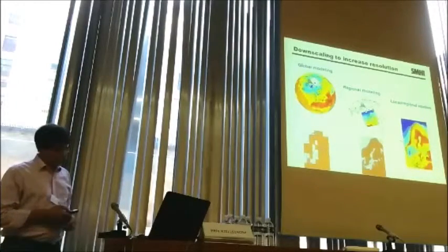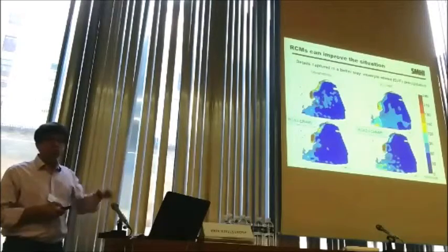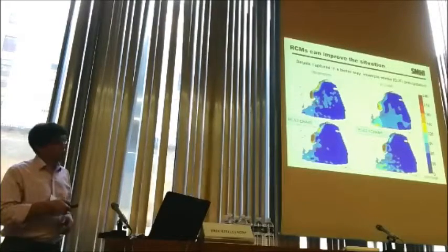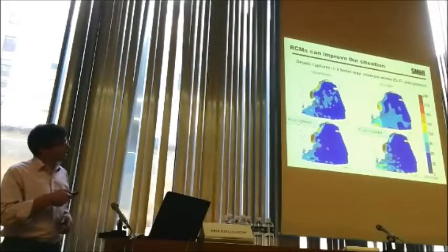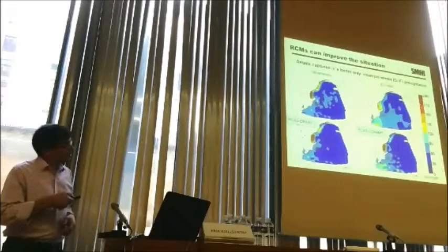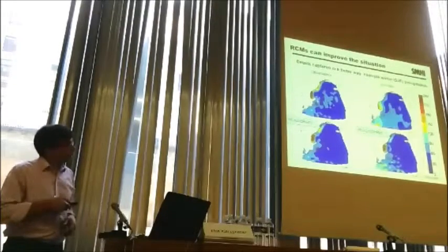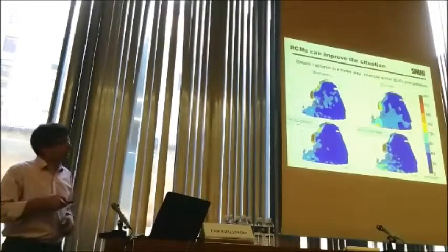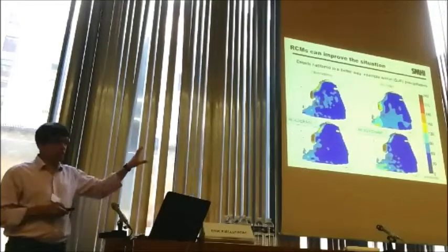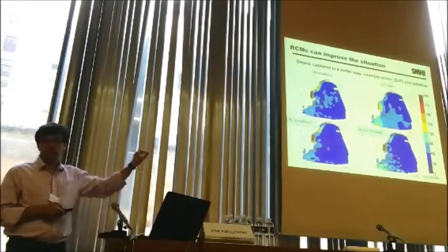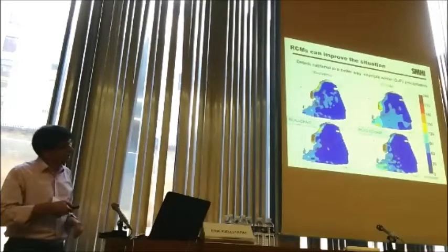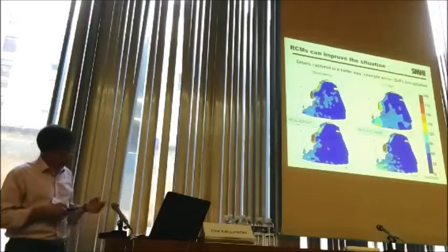The next slide simply shows that this method works. On the top we have the two maps shown before. In the bottom we have downscaled results with the regional climate model downscaling reanalysis data close to observations, and downscaling of the global climate model showing much better detail at the regional scale. We really improve the details and get much closer to observations — information that is more useful for a user interested in what's going to happen in Norway, Sweden, or any other country.